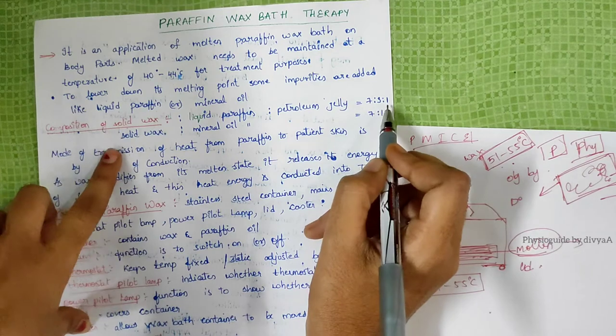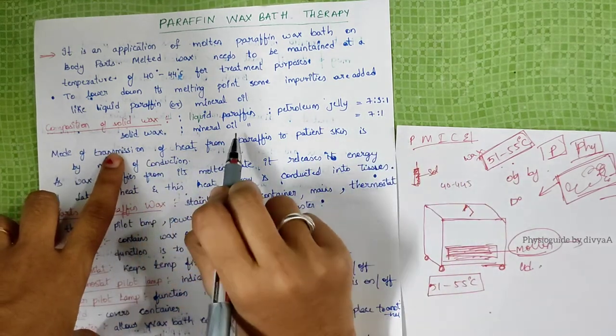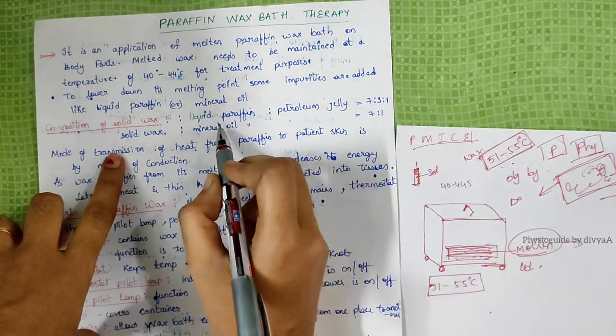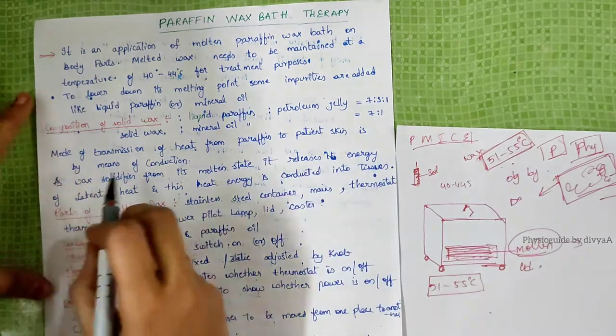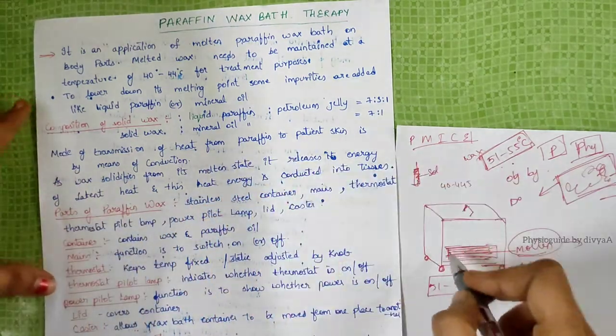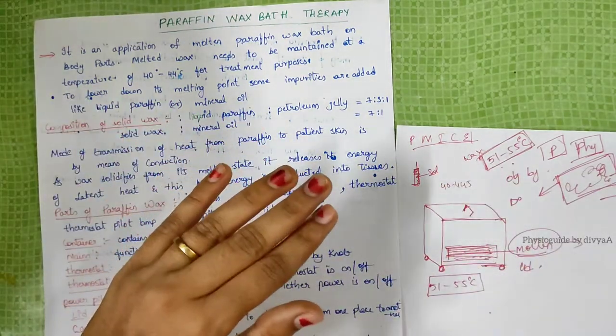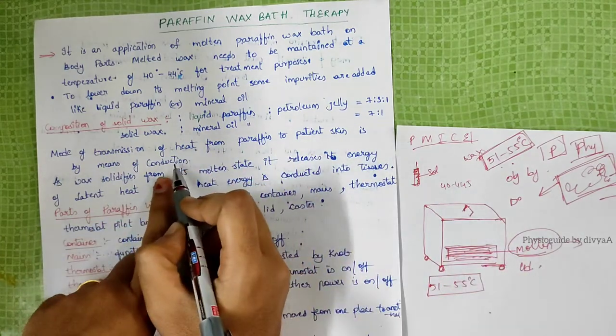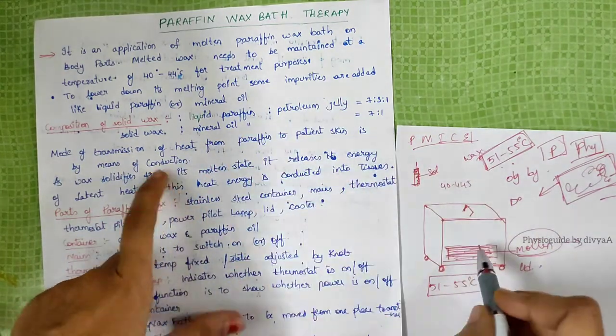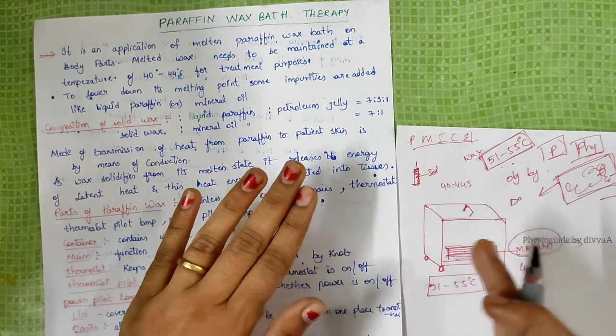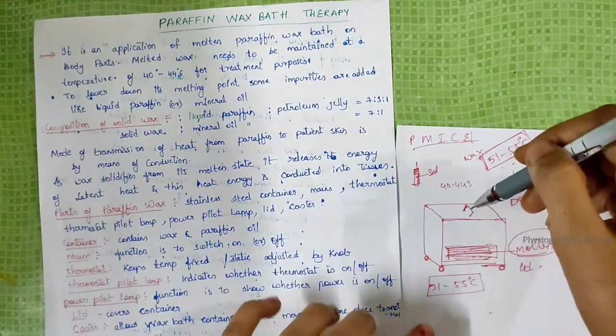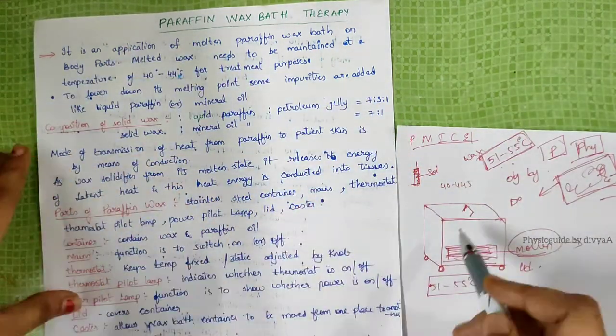Solid wax composition: solid wax, liquid paraffin, and petroleum jelly in 7:3:1 ratio. Or solid wax, mineral oil, and paraffin liquid in 7:1 ratio. The mode of transmission of heat from wax to patient skin is by means of conduction, which means transfer of heat by direct contact.